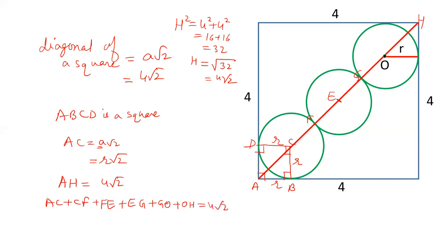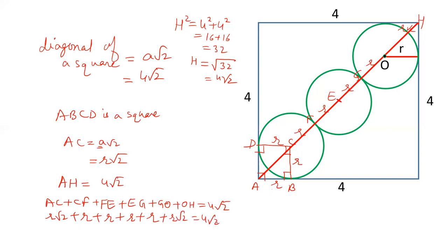So A, H equals: A, C is R root 2; C, F is R; E, F is R; E, G is R; O, G is R; and O, H is R root 2. Adding all these parts together: 4R plus 2R root 2 is equal to 4 root 2.